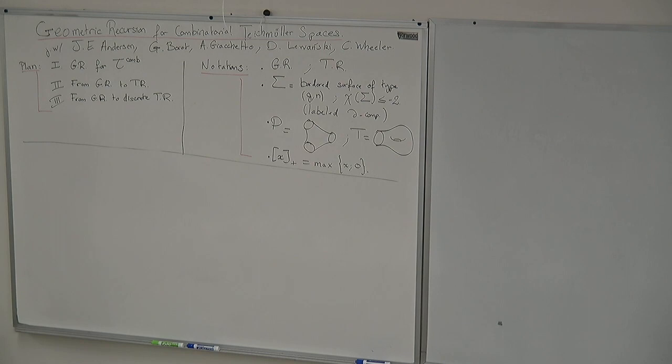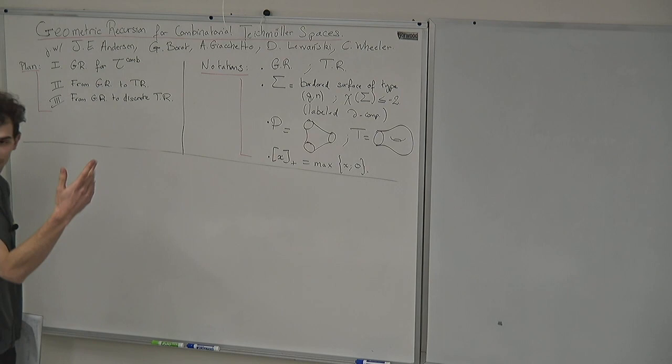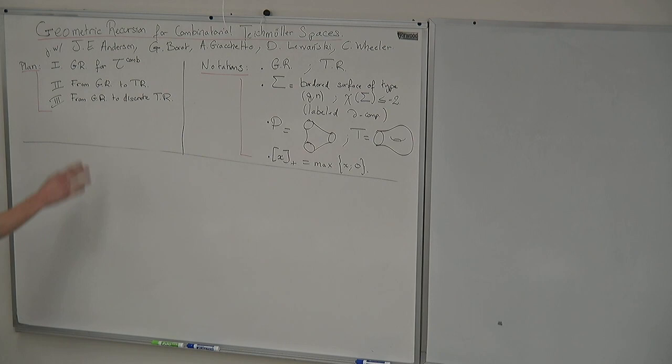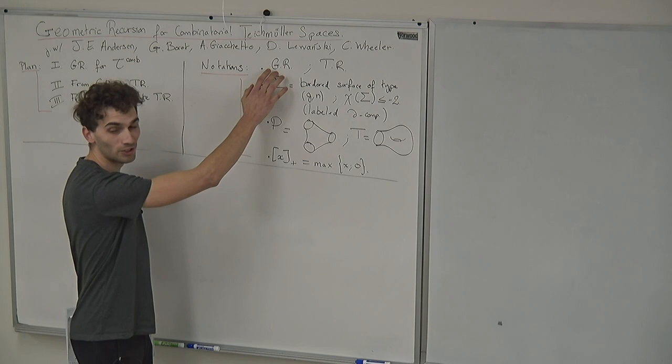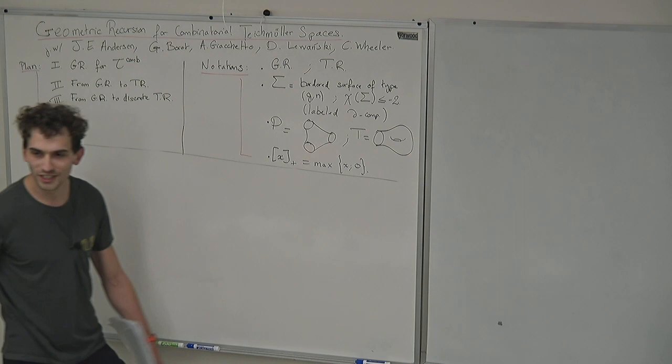Here is the plan for this talk. First, I will present the setup of GR for the combinatorial Teichmüller space. Second, from geometric recursion, how we can obtain some topological recursion formula. And third, how we can also obtain a discrete topological recursion formula, thanks to the integral structure of the moduli space. GR stands for geometric recursion, and TR for topological recursion.